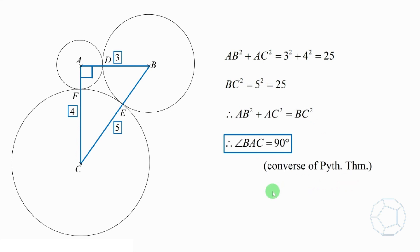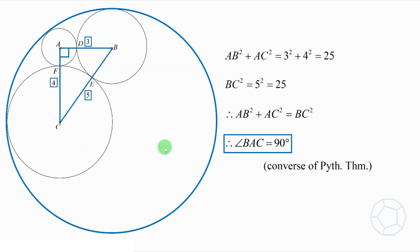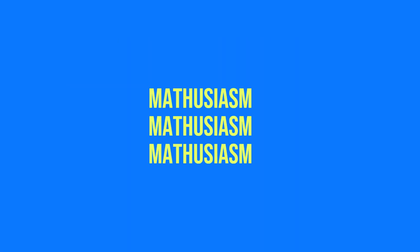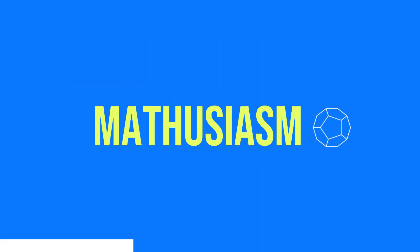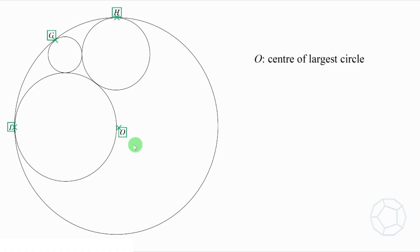Up to this point, we have nearly all the information about the three smaller circles. What about the largest one? Let O be the center of the largest circle. The points of contact are called G, H, and I.